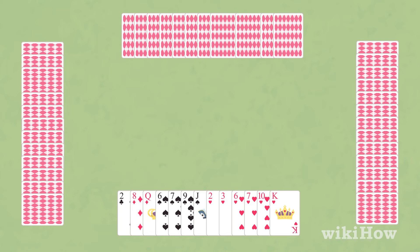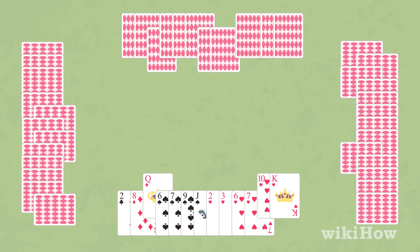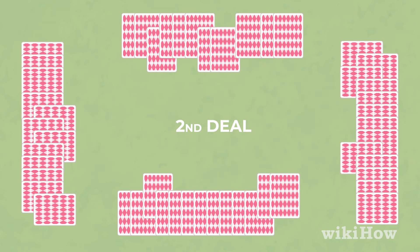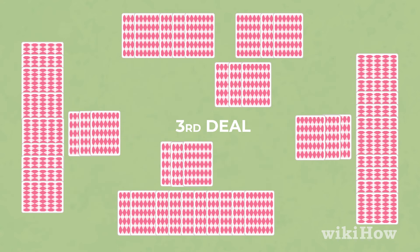Each player should organize their cards by suit, then choose three cards to pass to another player. On the first deal, pass them to the left. On the second deal, pass the cards to the right. And on the third deal, pass them straight across.